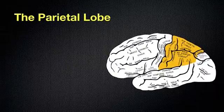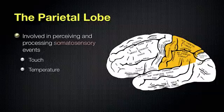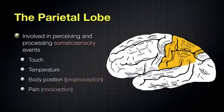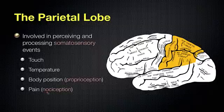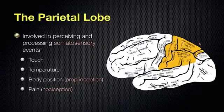The parietal lobe is primarily involved in perceiving and processing somatosensory events — things like touch, temperature, body position, and pain. The term we use for body position is proprioception, and the term we use for pain is nociception. So proprioception and nociception are also involved in the processing of the parietal lobe.